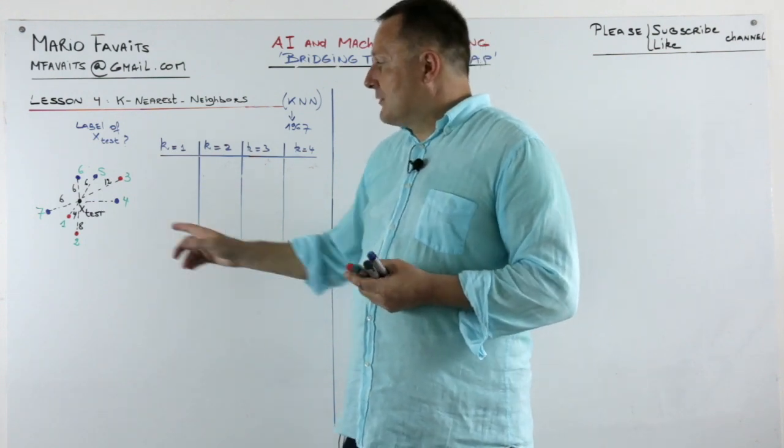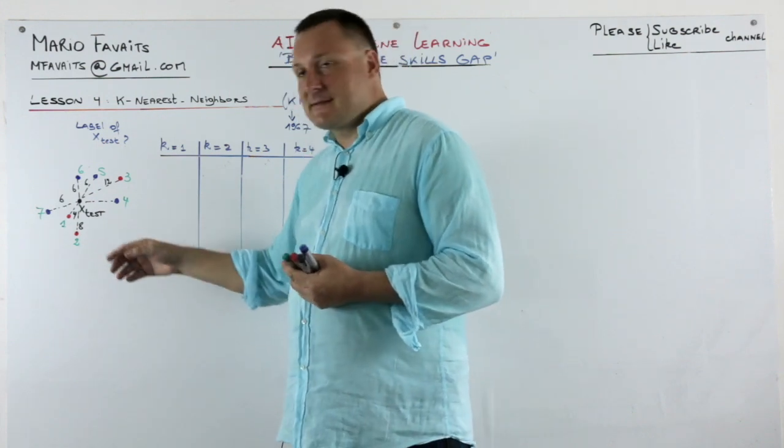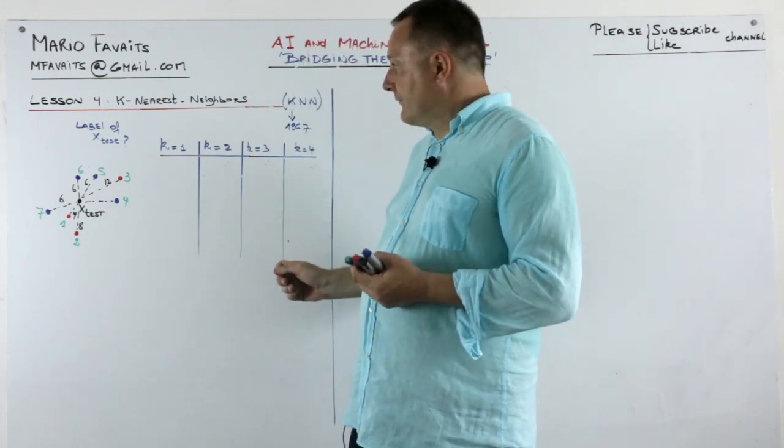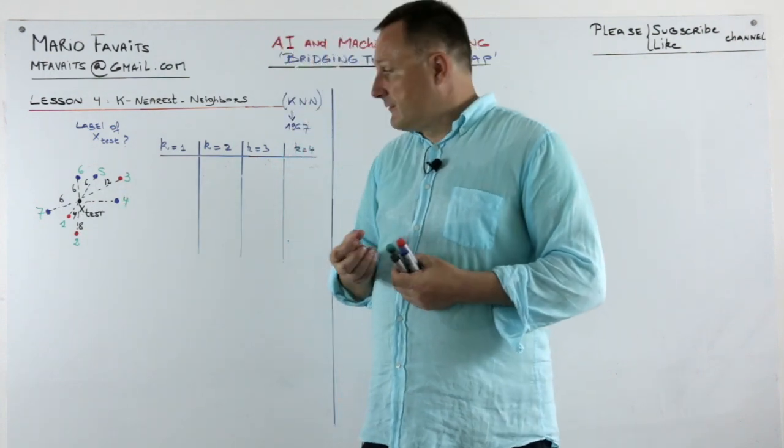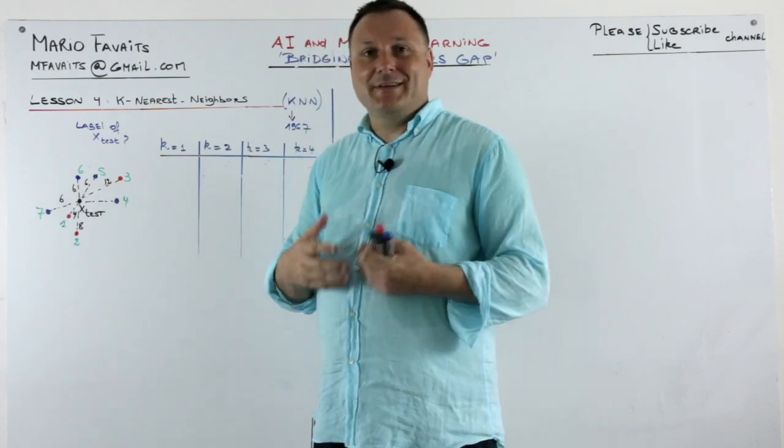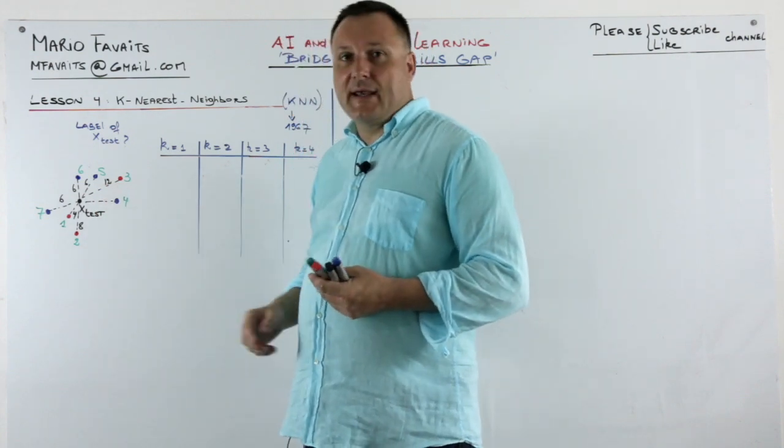Now we're going to try to predict the class of x-test for several k's. The green numbers you see are the indices of the points whereas the black numbers you see are the distance between the points and x-test.